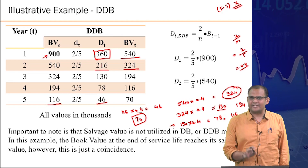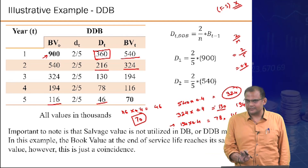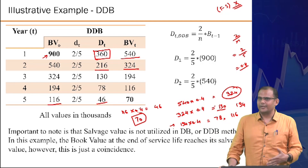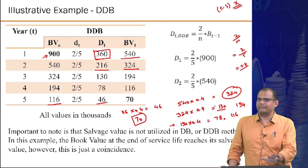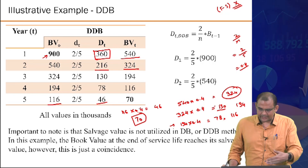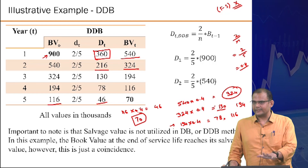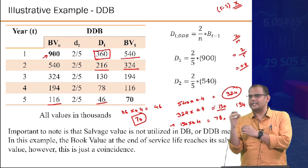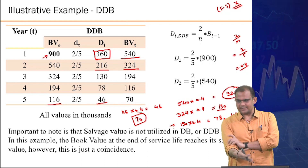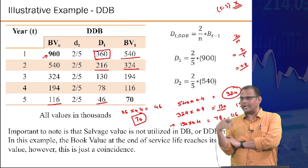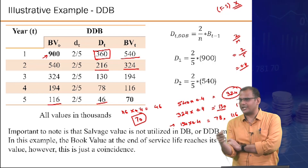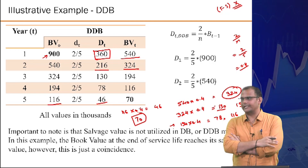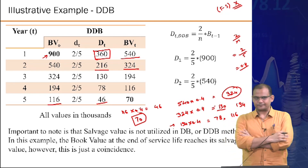In this example, the final DDB value coincidentally matches the salvage value of 70 — this is purely by luck, not by design of the formula. Salvage value is never a consideration when starting a DDB calculation. Changing the initial values slightly would mean the result would not match, requiring a method switch.